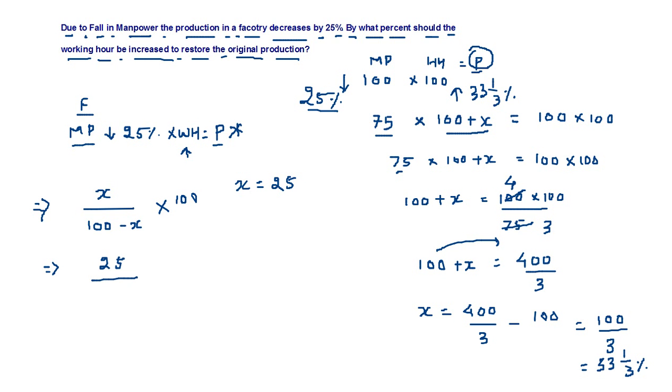This is 25 upon 75 into 100. 25 upon 75 is 1 by 3. So the final value we have is 100 upon 3, which is also 33 and 1/3 percent. Easy problem, just for the basics.